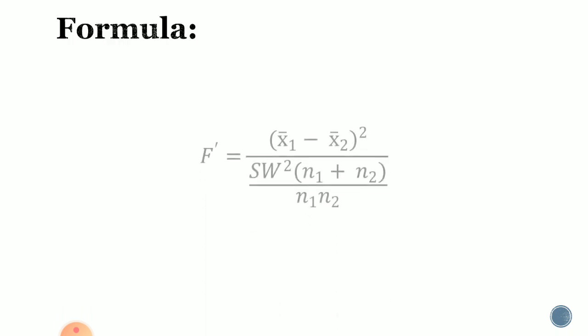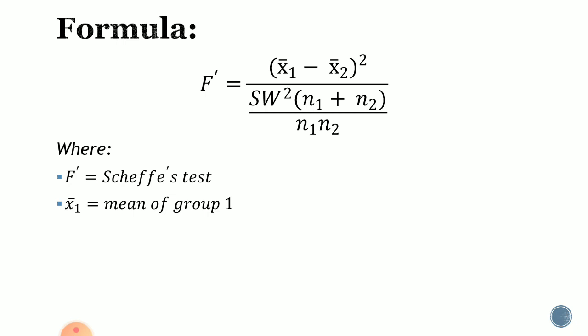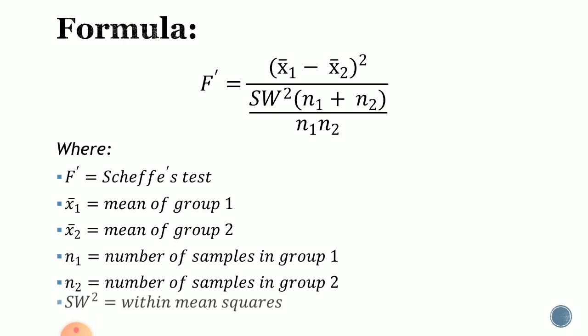We use the formula: F-prime is equal to the quantity X-bar sub 1 minus X-bar sub 2, squared, all over SW squared times the quantity N sub 1 plus N sub 2, all over N sub 1 times N sub 2. Where F-prime is the SCIFS test value, X-bar sub 1 is the mean of group 1, X-bar sub 2 is the mean of group 2, N sub 1 and N sub 2 are the number of samples in each group, and SW squared is the within mean squares.